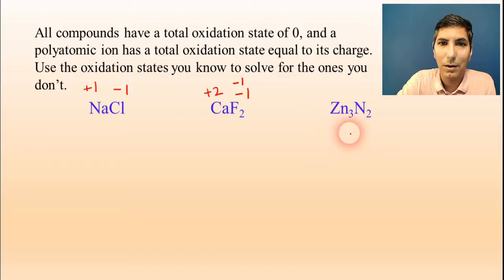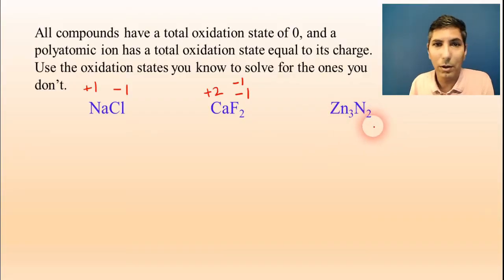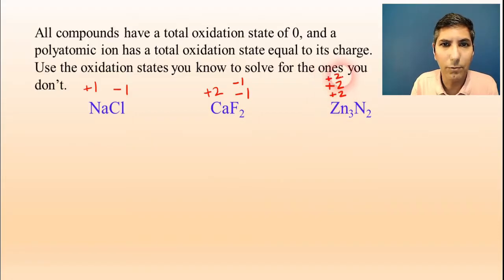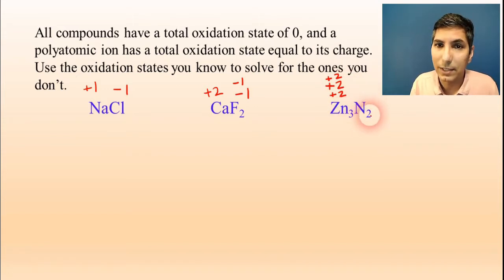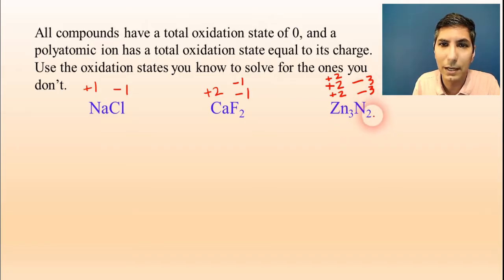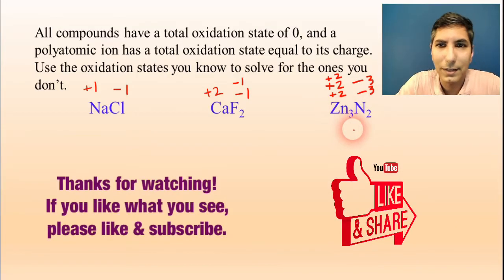In zinc nitride, zinc when it's an ion is always plus two, and we have three of those, giving a total of plus six. That means the nitrides have to have a total of negative six between those two, so negative six divided by two is negative three — each nitride is negative three. You could also just unswap the charges: the three means nitride is negative three, and the two means zinc is plus two. There are a couple of different ways to solve these.